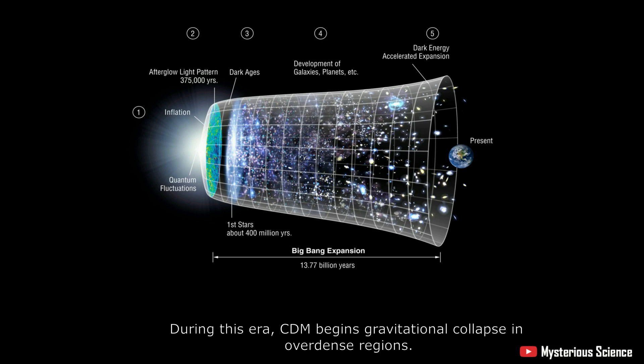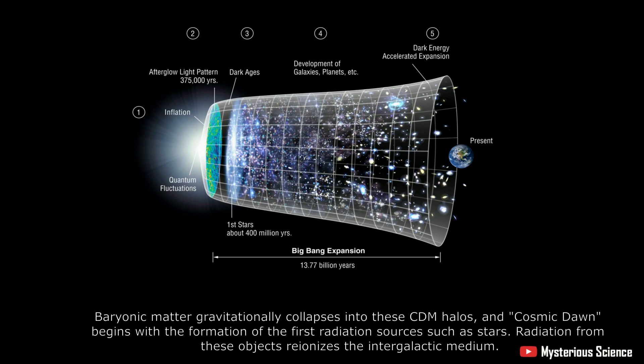During this era, CDM begins gravitational collapse in over dense regions. Baryonic matter gravitationally collapses into these CDM halos, and cosmic dawn begins with the formation of the first radiation sources such as stars. Radiation from these objects reionizes the intergalactic medium.